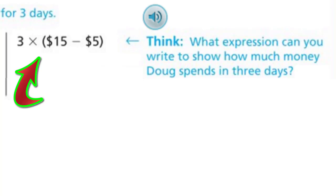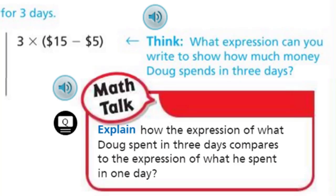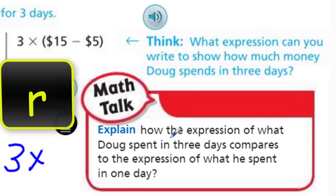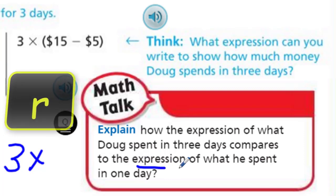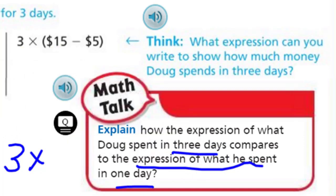And over here we have the three times, because we have that $15 minus the $5. What expression could you write to show how much money Doug spends in three days? That three times would represent the three days. Comparing the expression for three days versus one day — it would be three times as much because he's spending that same amount over three days.